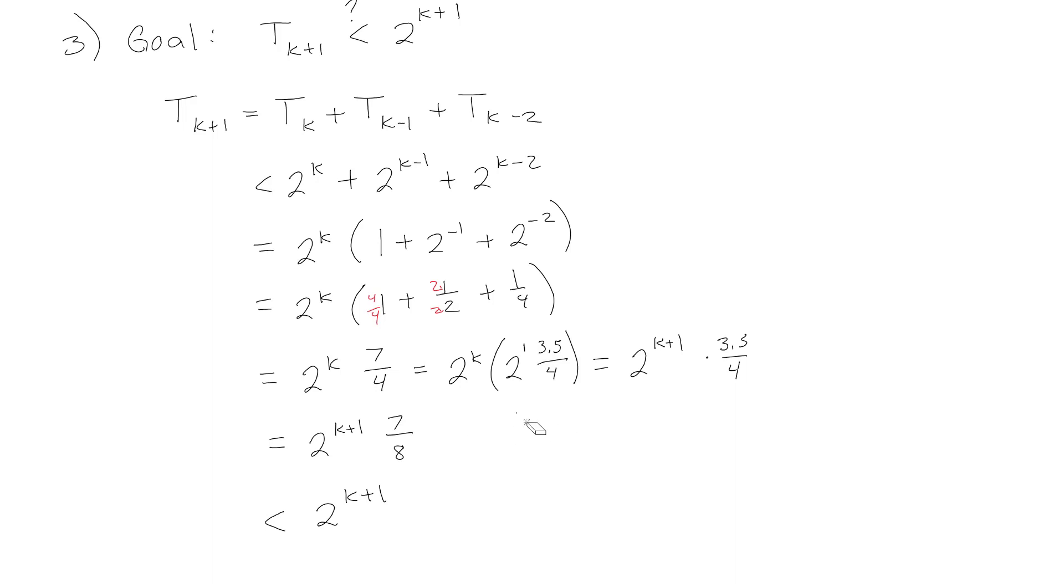But yeah, again, the idea that 7 eighths of something is clearly less than the entire thing of something. But yeah, so we were able to show getting from the base case and from the recursive definition. So it was a little bit different because we didn't have the equation to perturb. We had a recursive definition that we just kind of messed with. And so we got to where we needed to go.